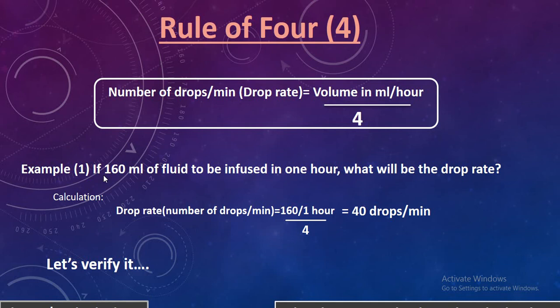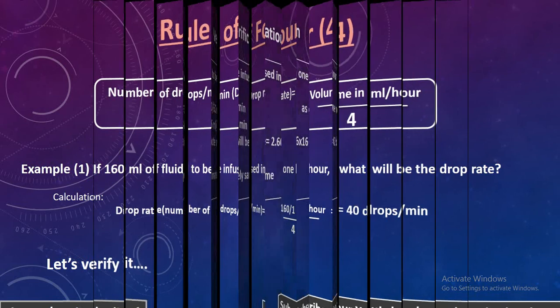Let's look at this example. If 160 mL of fluid is to be infused in one hour, what will be the drop rate? How many drops per minute should be infused? Putting the data into the Rule of 4: 160 mL per hour divided by 4, it comes out to be 40 drops per minute.